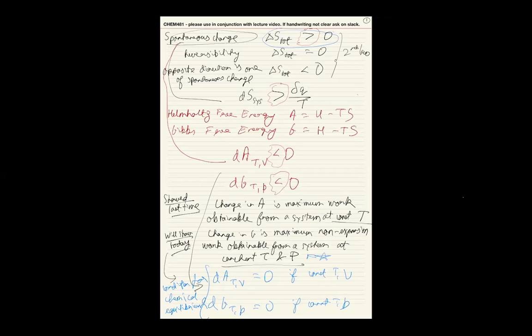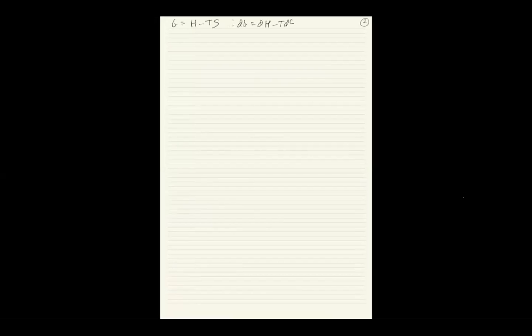Maximum means the system is being driven reversibly — no dissipation, no losses. We showed this for A; now we show it for G. G = H - TS, therefore dG = dH - TdS - SdT. At constant T, this becomes dG = dH - TdS. H = U + PV, therefore dH = dU + d(PV). Let's call these equations 1 and 2.